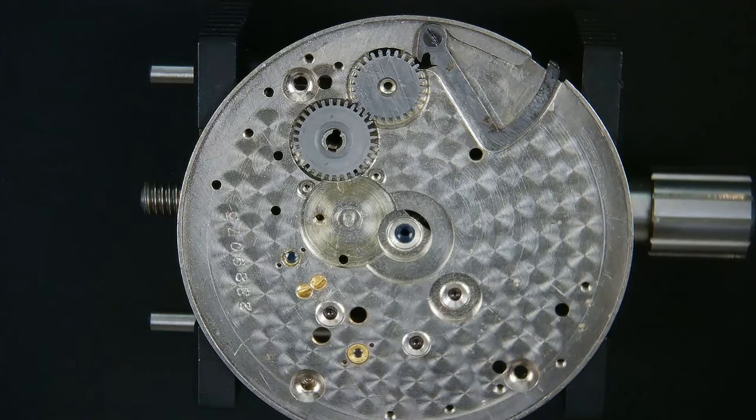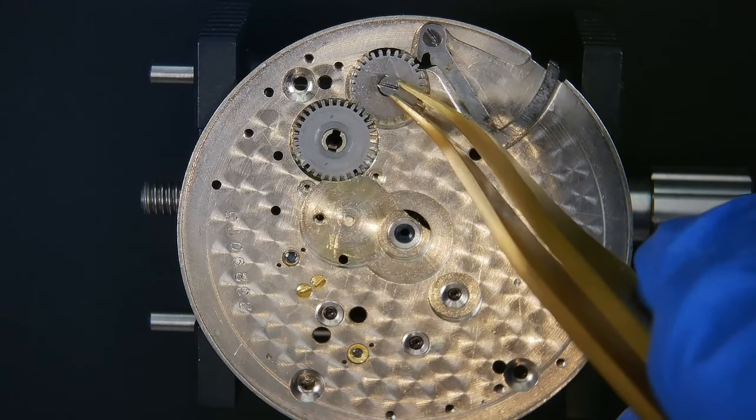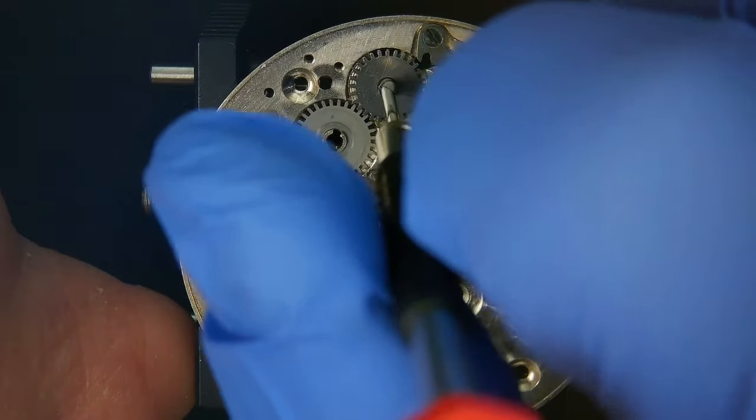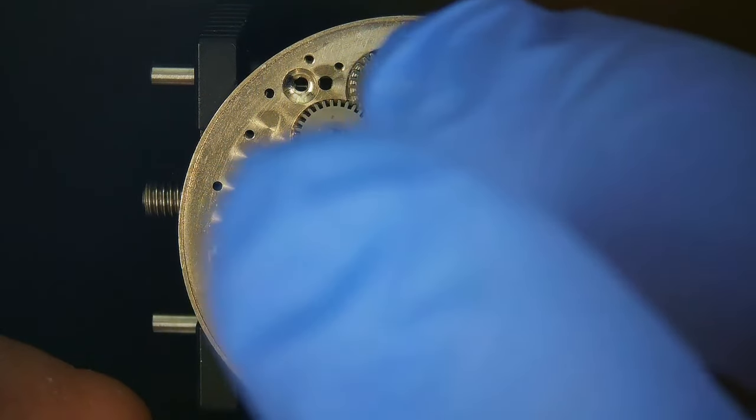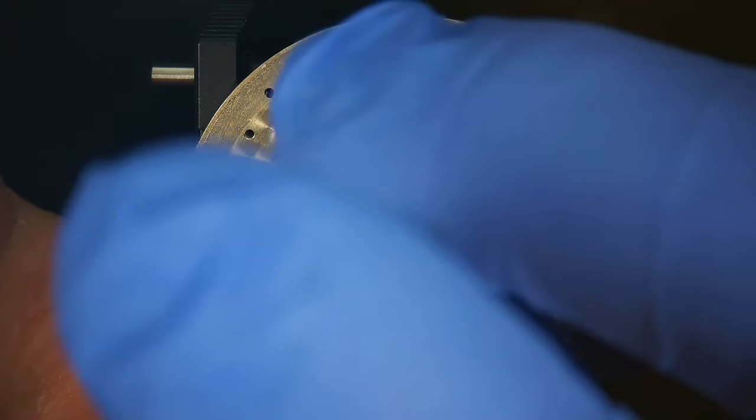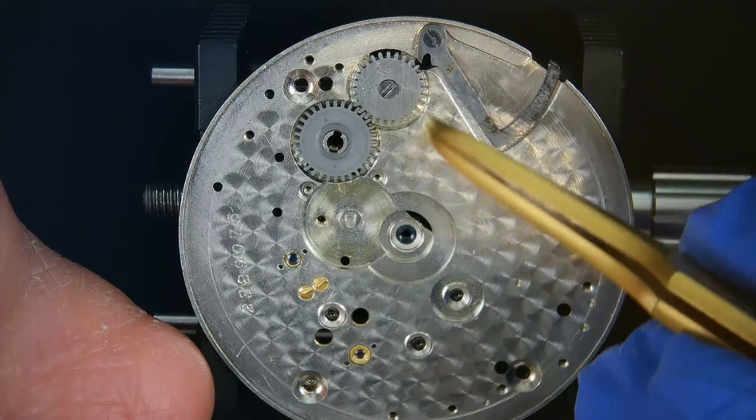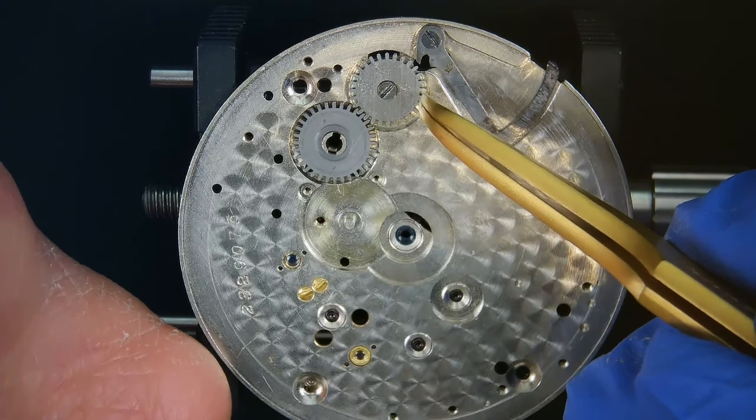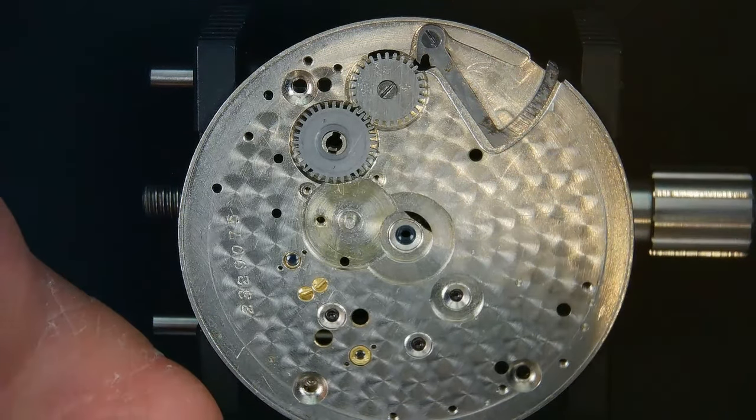Continuing on with the assembly, we get this intermediate setting wheel in place. And there. Wait, no, it's not moving. I know. I accidentally used the screw for this wheel and the setting lever.